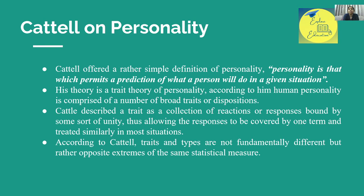His theory is a trait theory of personality. The main trait theorists are Allport, Eysenck, and Cattell. According to Cattell, human personality is comprised of a number of broad traits or dispositions. He defined a trait as a collection of reactions or responses — when we receive a stimulus in life, we react or respond, and this collection of responses, bound by some unity, allows responses to be covered by one term and treated similarly in most situations.